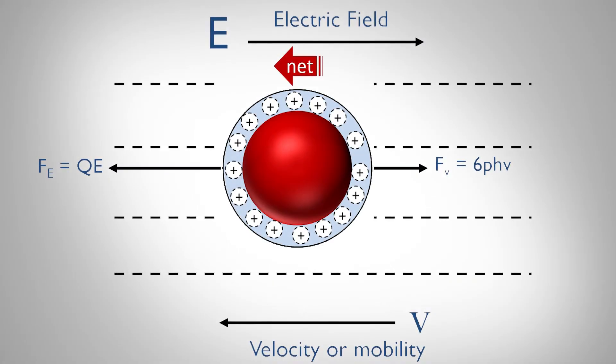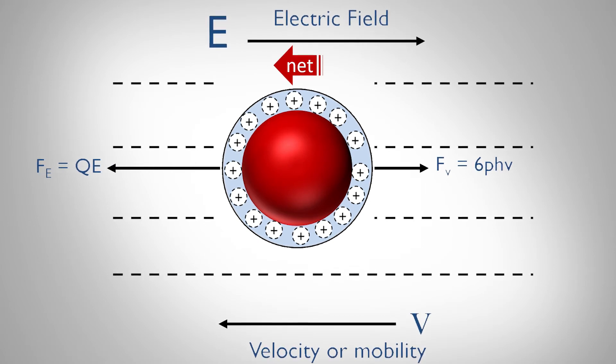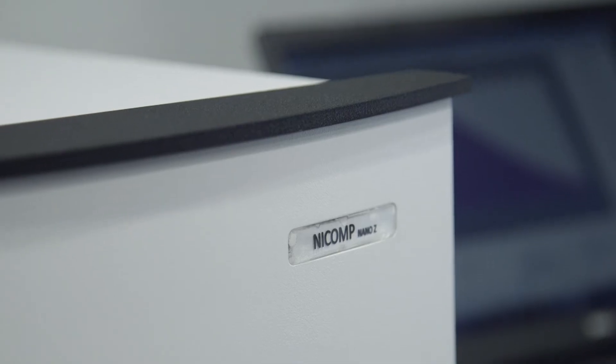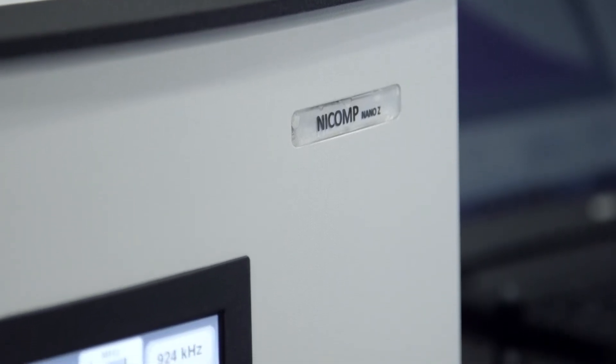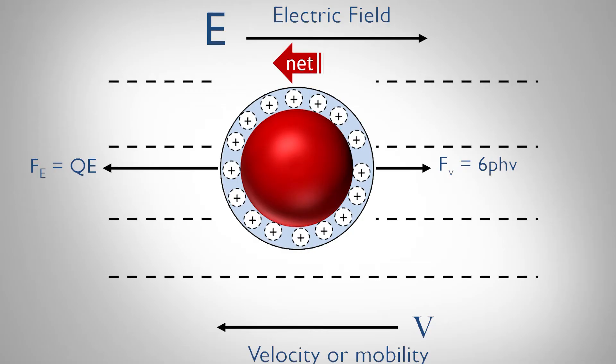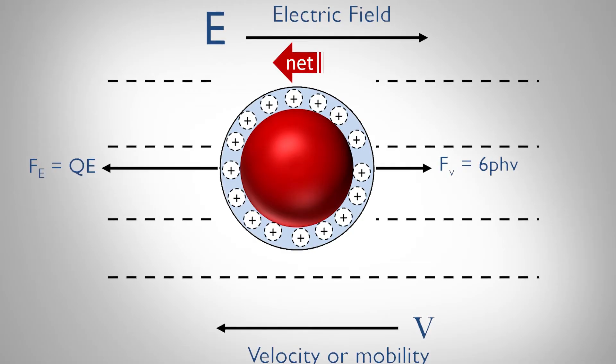The charge on the surface of particles, or the zeta potential, is measured by applying an electric field to the sample. The direction of the particle motion indicates if the charge is positive or negative, and the speed of the particles is used to calculate the magnitude of the charge.